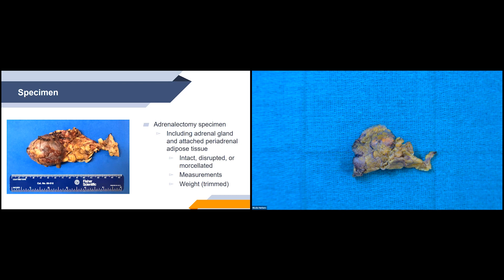An accurate weight for adrenal neoplasms is very important. Although weight cannot be used as the sole criteria for malignancy, adrenal cortical neoplasms weighing less than 50 grams are almost always benign, versus malignant tumors which are typically greater than 100 grams.